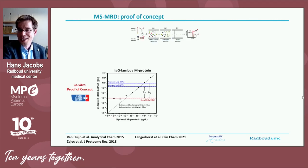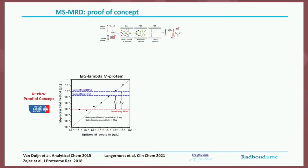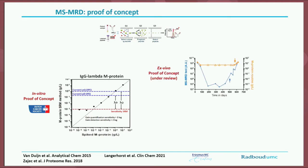On the lower left is a dilution experiment of the very first patient sample we tested, in which we diluted a patient serum in normal serum. Without method optimization, we already achieved a thousand-fold more sensitive M protein quantification compared to routine M protein diagnostics. From that same patient, we started measuring real serum samples over time. The open orange samples show that with routine M protein diagnostics we could not measure disease activity for almost two years. However, using mass spectrometry we could perfectly follow disease activity over time, illustrated by the blue line, and also detect relapse many months earlier, illustrated with the blue arrow.